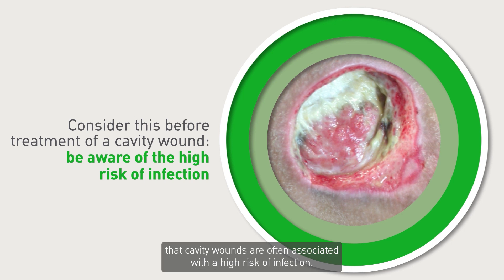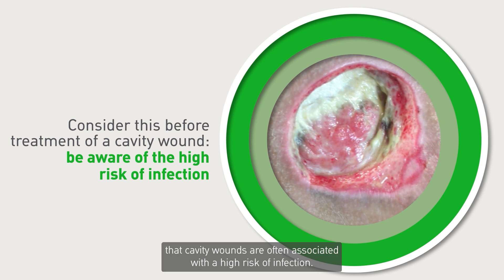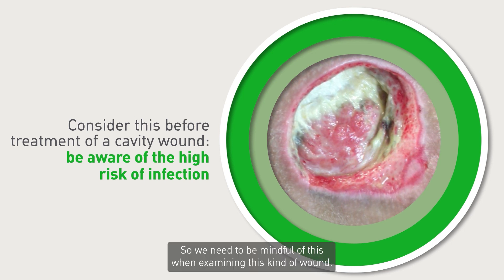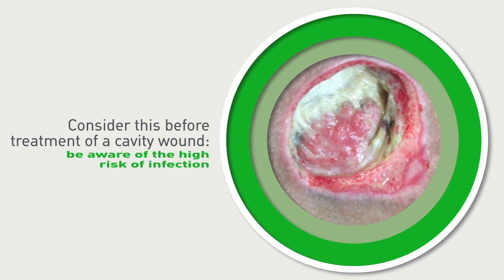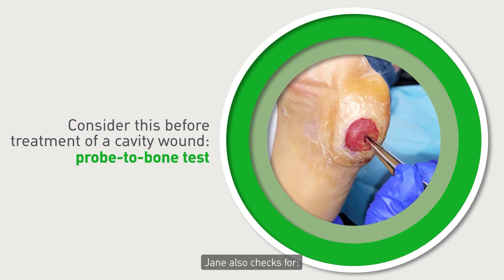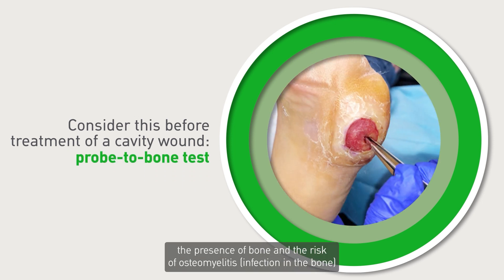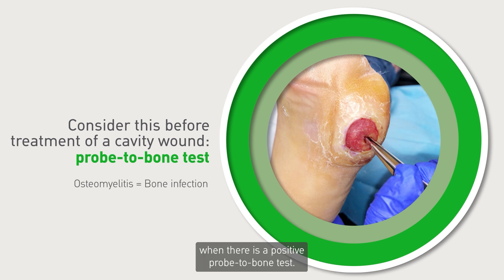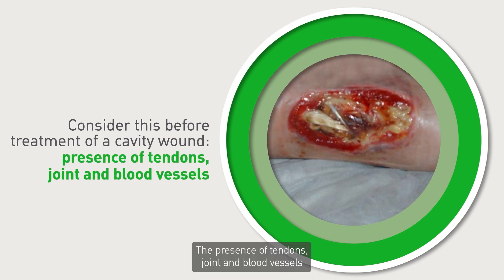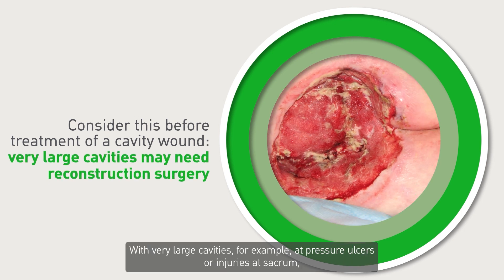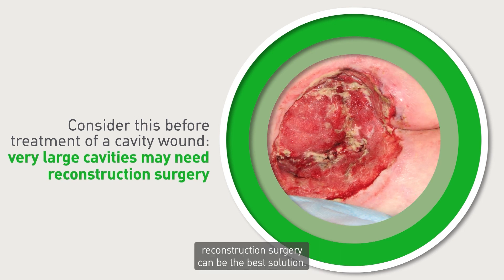We need to be aware that cavity wounds are often associated with a high risk of infection, so we need to be mindful of this when examining this kind of wound. Jane also checks for the presence of bone and the risk of osteomyelitis — infection in the bone — when there is a positive probe-to-bone test. The presence of tendons, joints, and blood vessels always need to be kept moist and protected. With very large cavities, for example at pressure ulcers or injuries at the sacrum, reconstruction surgery can be the best solution.